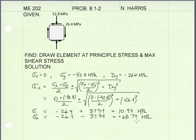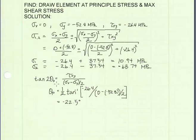Next, I'm going to find the angle we need to rotate the element in order to change the stress state from the given element to the principal stress state. Using the equation to find θp — the angle needed to rotate the element to the principal stresses — and plugging in values for σx, σy, and τxy, we get a value of negative 22.5 degrees. So we'll be rotating our element clockwise 22.5 degrees to reach the principal stress state.